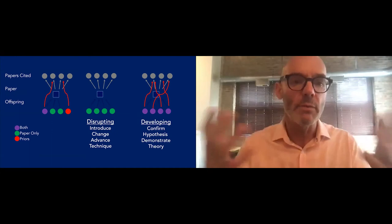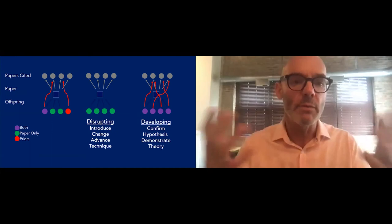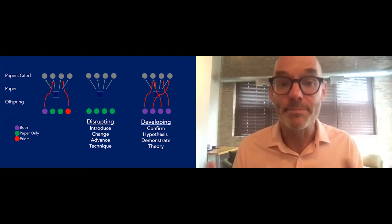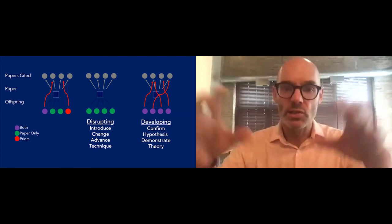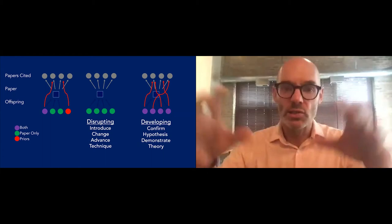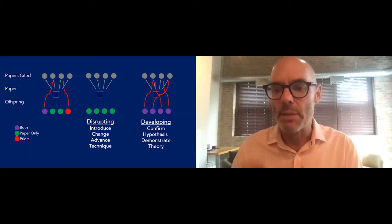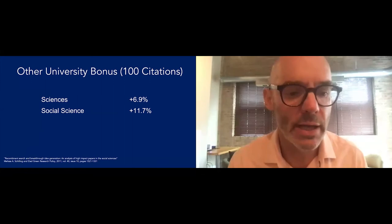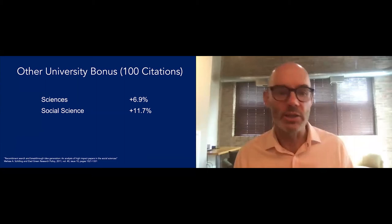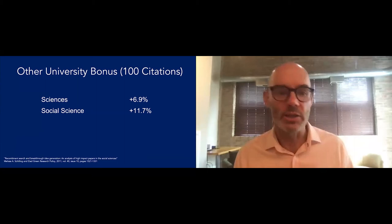How exactly do they test this? If I have a paper and people cite my paper and they cite some of the papers I've cited, that's just a normal paper. A disrupting paper is if I come up with something entirely new, like CRISPR. So all of a sudden, everything I cited, nobody's citing that. They're just citing CRISPR. You use words like introduce, change, advance, technique. A developing paper is one where people cite my paper and the stuff I've cited, but I'm using words like confirm hypothesis, demonstrate theory. This is standard science applied to a new idea.